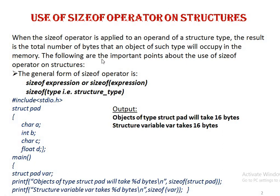In structures, sizeof works in a different way. We have different types of member variables: character A, integer B, character C, and float D. The size of the structure is calculated as a multiple of the largest data member. The largest data member is float, having 4 bytes, so each member variable is given 4 bytes — 4+4+4+4 equals 16.